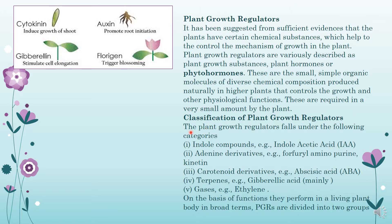Now how are they classified? They are classified on the basis of chemical composition. The plant growth regulators are classified into different categories: indole compounds, that is indole acetic acid; adenine derivatives, that is the aminopurine, that is the kinetin, which is generally the cytokinin; carotenoid derivatives, that is abscisic acid; terpenes, that is gibberellic acid; and the gaseous form, that is ethylene. So we will see that in case of plants, basically five types of hormones are produced. In the human body different types of hormones are produced by different endocrine glands, but in case of plants there are broadly five categories of hormones.